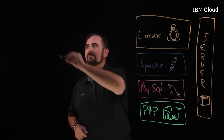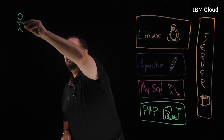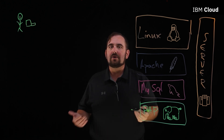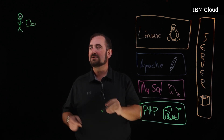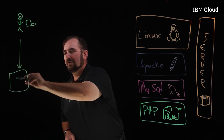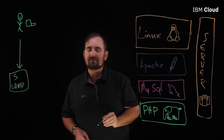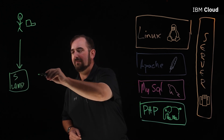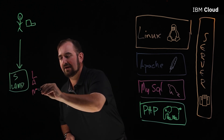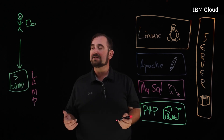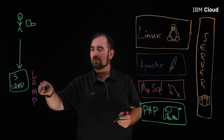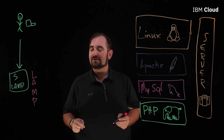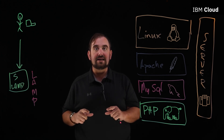Now let's talk about how these components work together. Imagine a user with a laptop who wants to visit your website. He sends a request to your server running LAMP, saying: please send me your front page. That request comes in and hits Apache.